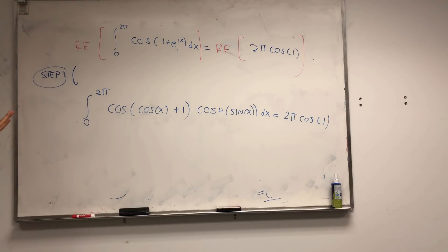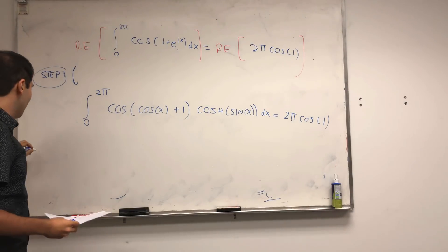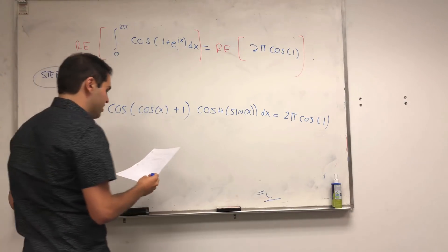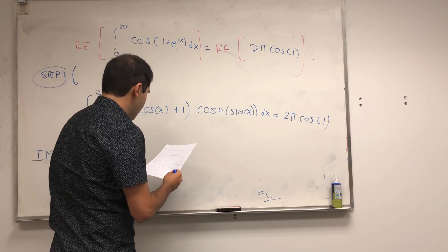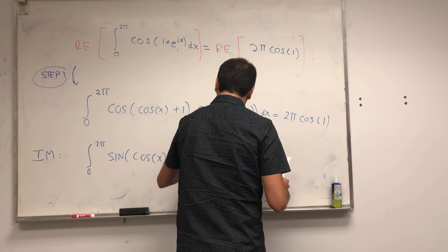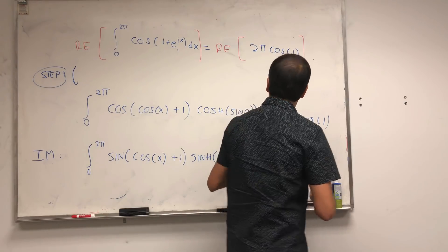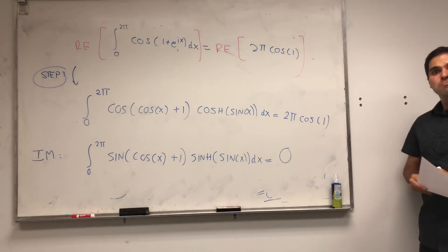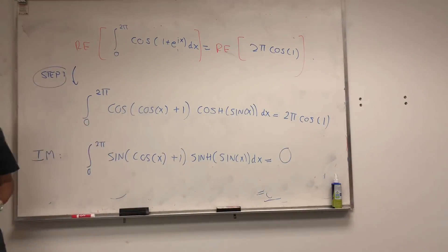And not only that — again, amazing — but if you want to just take the imaginary part, then in fact you also get the other integral: integral from 0 to 2π of sine of cosine of x plus 1, sinh of sine of x, dx equals the imaginary part of this, which is 0. Pretty neat! Thanks, our buddy Cauchy, for finding this formula.